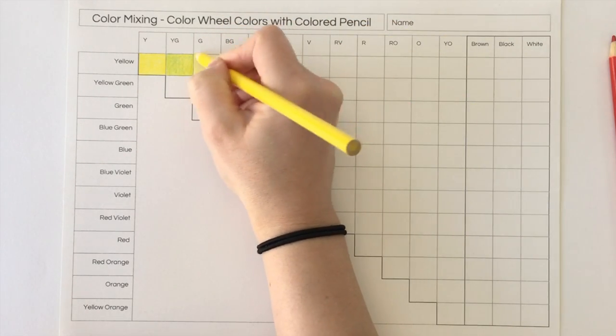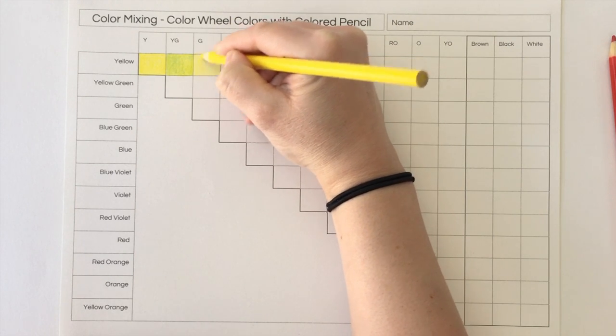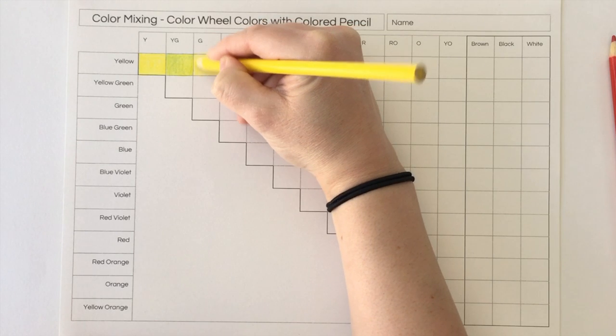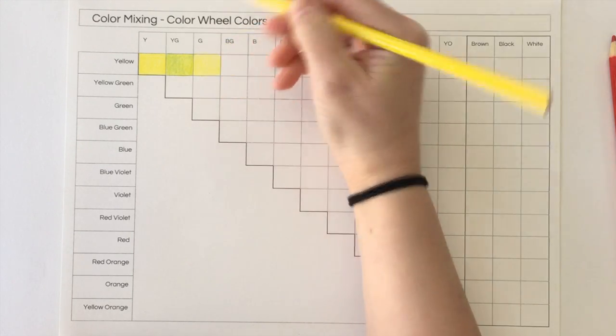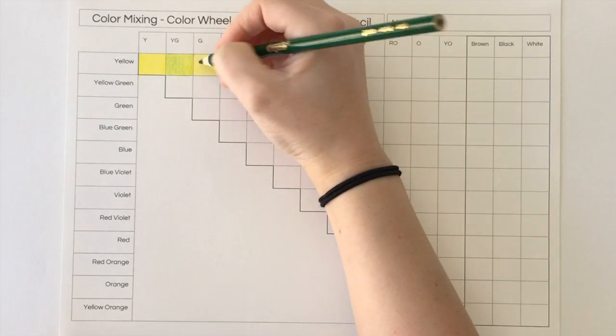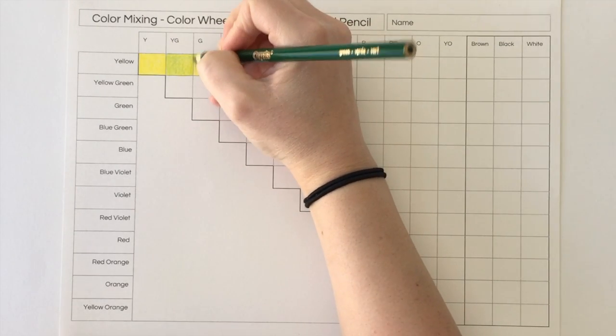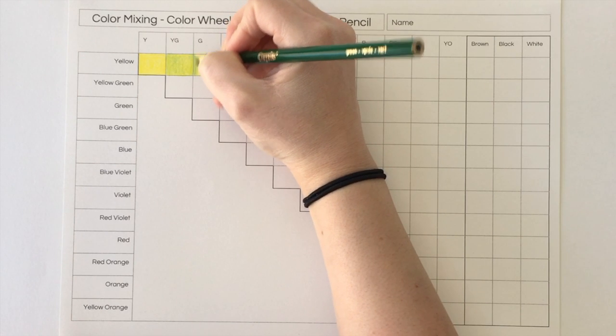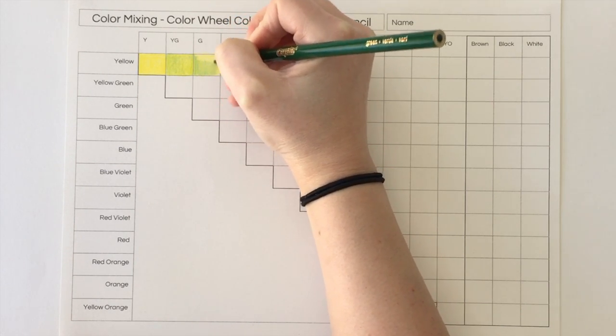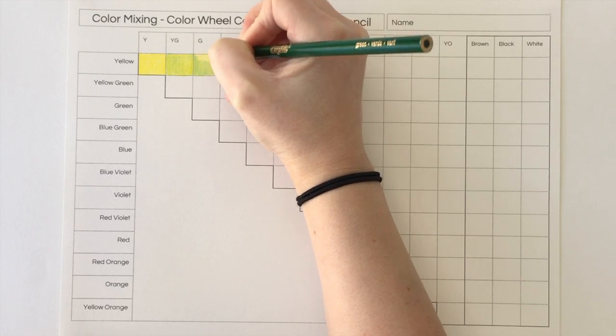First layer is yellow. Now I'm going to use green. And I know this is a darker green, so I'm not going to press as hard, just because I don't want it to end up just looking like green.